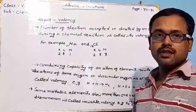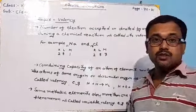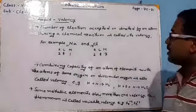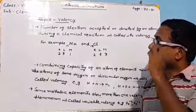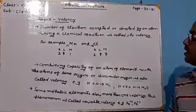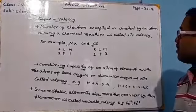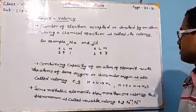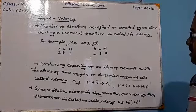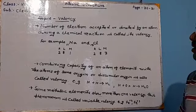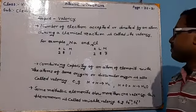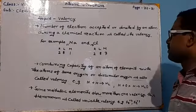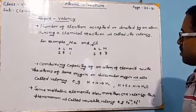Good morning students. Today in this class we will discuss the topic of valency. Valency can be defined as the number of electrons accepted or donated by an atom during a chemical reaction.